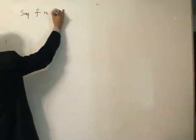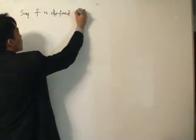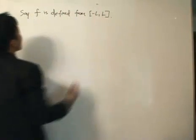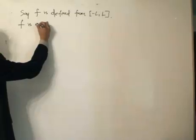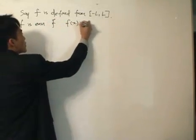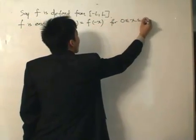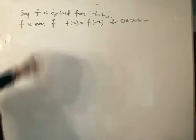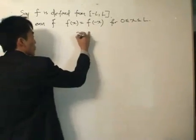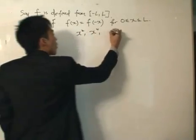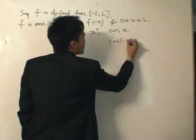If you take a standard course in algebra or analysis, you would know what odd and even functions are, but let's go through them briefly to facilitate our study in Fourier analysis. A certain function f is defined from minus L to L. f is even if f(x) equals f(minus x) for 0 to L. Certain functions which are even would be x squared, x to the fourth, and the cosine x function, because the cosine function can absorb the minus sign.